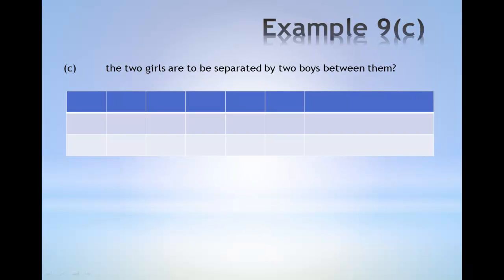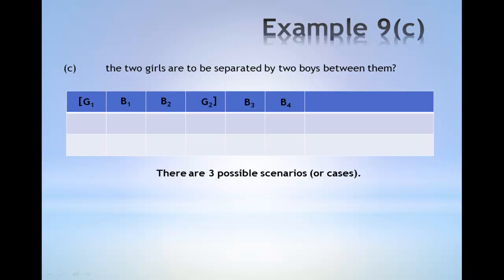Example 9c: the number of ways the two girls are to be separated by two boys between them. In this situation, there are three possible scenarios or cases. The first case, the second case with the group of two boys and two girls being in between the two other boys, and the last case where the two boys and two girls are on the right of the other two boys.